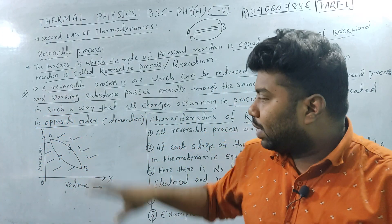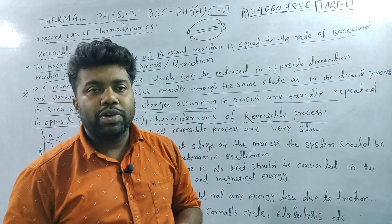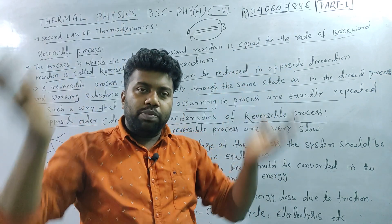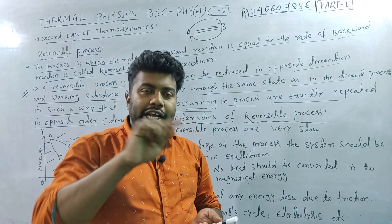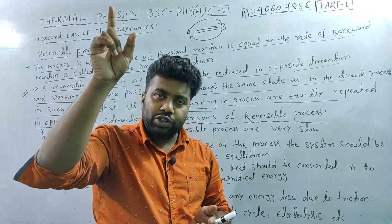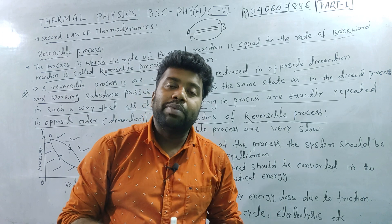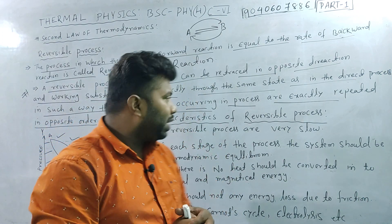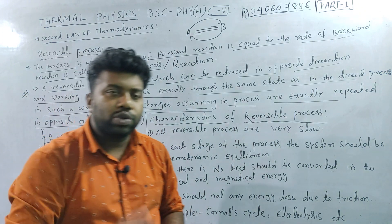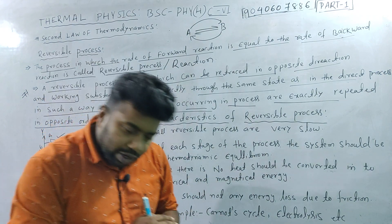You can write the definition as well as the diagram. These are the characteristics of the reversible process. The best example of a reversible process: every reversible process is very slow. Every natural process is reversible — that is the trend.